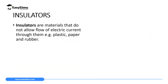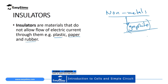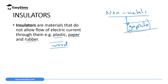The second category of materials is insulators. Insulators are materials that do not allow the flow of electric current through them. Good examples are non-metals — all non-metals don't conduct electricity except graphite, which is a non-metal that can conduct electricity because it has free electrons. All other non-metals like plastic, paper, rubber, wood, and all gases do not conduct electricity.